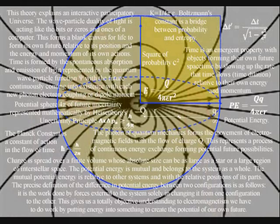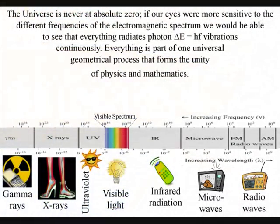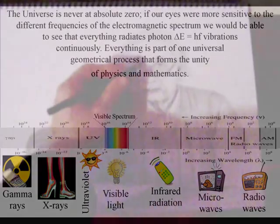This forms wave particle duality and we have to move up to the next part of the diagram. In this theory the wave particle duality of light and matter in the form of electrons is forming a blank canvas that we can interact with, forming the possible into the actual.